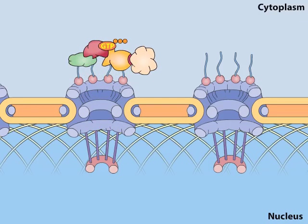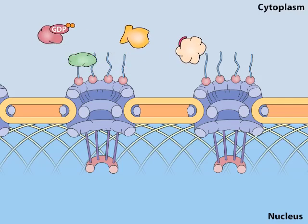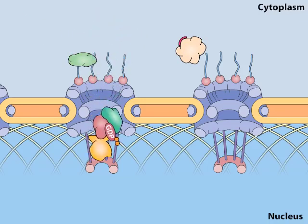Following transport to the cytosolic side of the nuclear envelope, GTP hydrolysis and release of RAN-GDP leads to dissociation of the cargo protein, which is released into the cytoplasm. Exportins are then recycled through the nuclear pore complex for reuse.